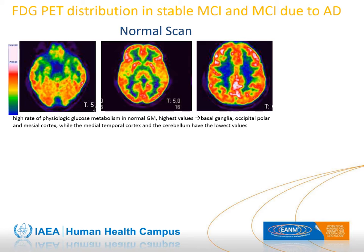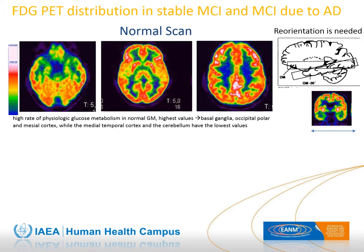Starting with the description of a normal FDG-PET scan: high physiologic glucose metabolism is present in normal gray matter, with the highest values in basal ganglia, occipital, parietal, and mesial cortex, while the medial temporal cortex and cerebellum have the lowest values. To better evaluate imaging, it is important to reorient images along the bicommissural line in sagittal view, and also in coronal view to ensure homologous structures appear at the same time for asymmetry evaluation.